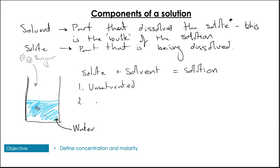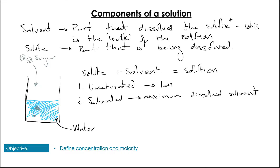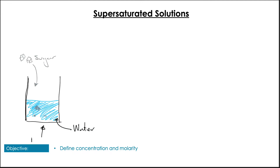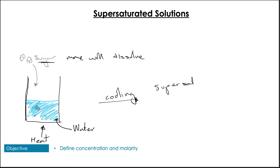We have two main types: unsaturated and saturated solutions. A saturated solution is one where the maximum dissolved solute is dissolved in the solvent. An unsaturated solution is one in which the amount of solute present is less than the maximum at a given temperature and pressure. There is another type called a supersaturated solution — we can make it by taking our sugar solution, heating it, adding more sugar at a higher temperature, and then letting it cool down, ending up with more dissolved than should be possible at that temperature.